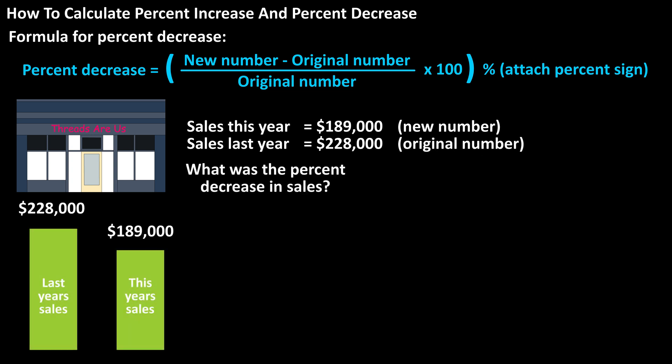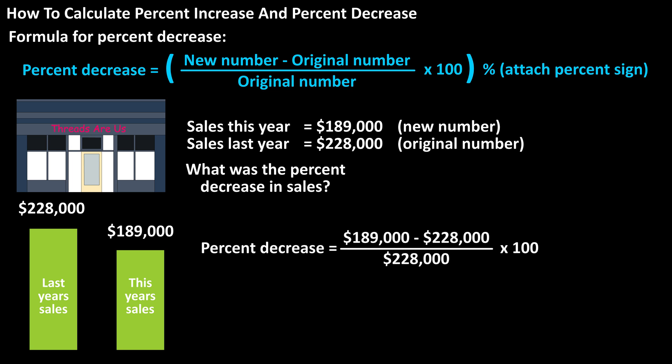Using our formula, we have: percent decrease equals $189,000 minus $228,000, divided by $228,000, times 100. That gives us negative $39,000 divided by $228,000, which equals negative 0.171 rounded off.